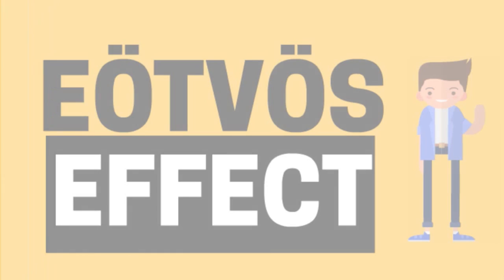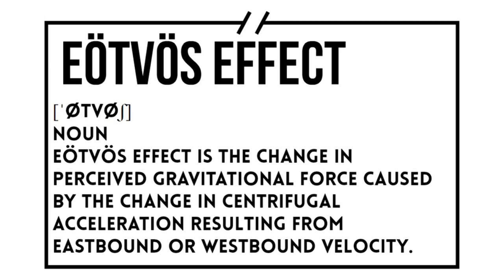Now that's out of the way, let's talk about the Eötvös effect. The Eötvös effect is the change in perceived gravitational force caused by the change in centrifugal acceleration resulting from eastbound or westbound velocity. When moving eastbound, the object's angular velocity is increased, which is in addition to Earth's rotation, and thus centrifugal force also increases causing a perceived reduction in gravitational force.